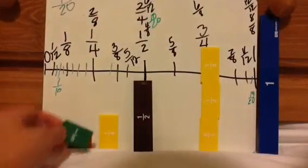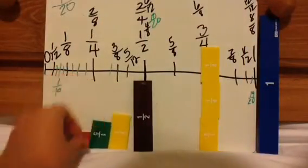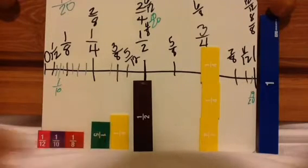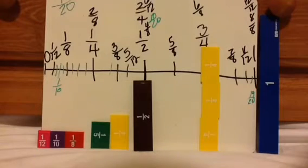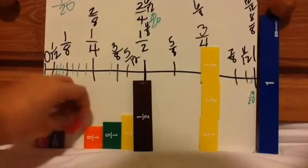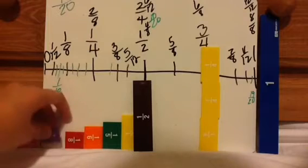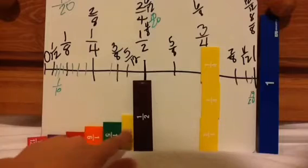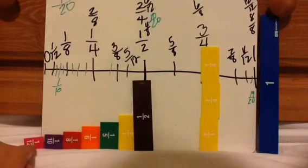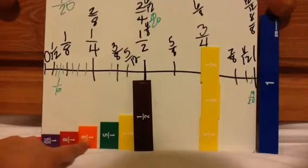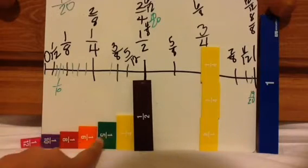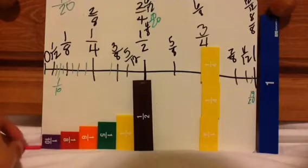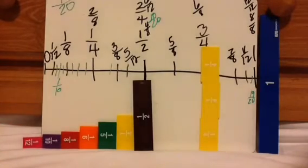Let's add 1 fifth — that would go right there. I'm going to have to make some room. 1 sixth would be right here. Maybe if I turn these sideways, this will help. It's actually getting very crowded. So: 1 twelfth, 1 tenth, 1 eighth, 1 sixth, 1 fifth, 1 fourth. So the bigger the denominator, the smaller the pieces — as long as there's a 1 as your numerator.